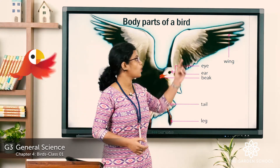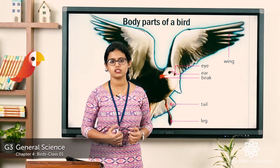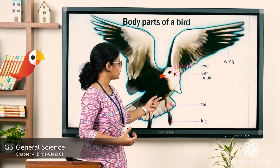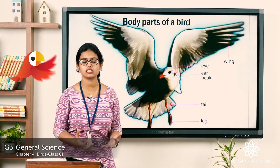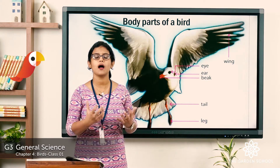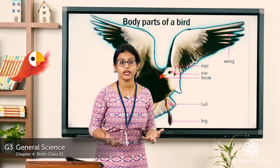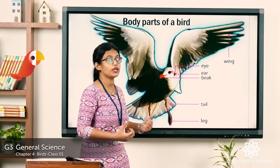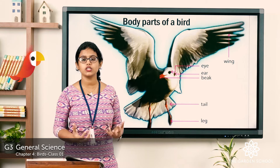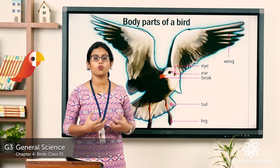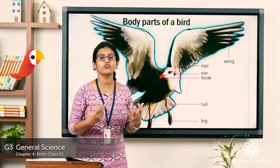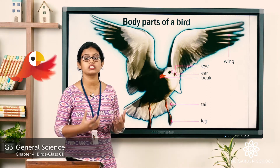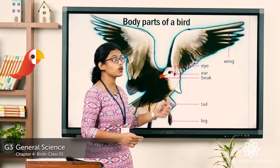Coming to the next part: wings. Birds have two wings and they fly with their wings. They also have a tail — the tail helps to balance the body of a bird during its flight. Then they have two legs and two feet. They walk, hop, and swim with their two feet. They have feet with claws, and different birds have different types of feet with claws.